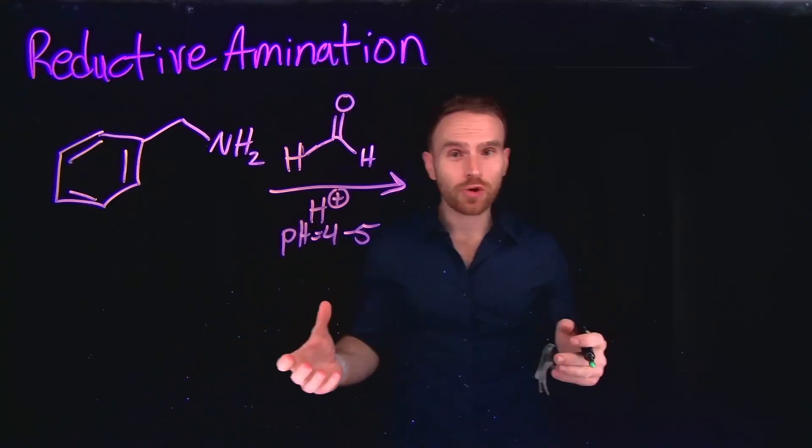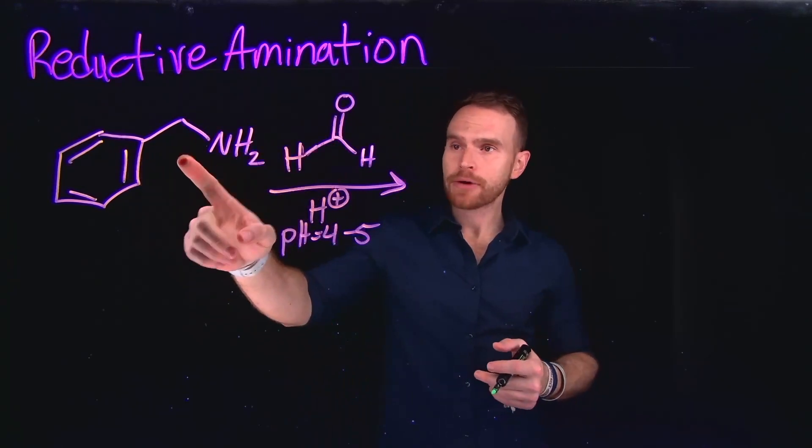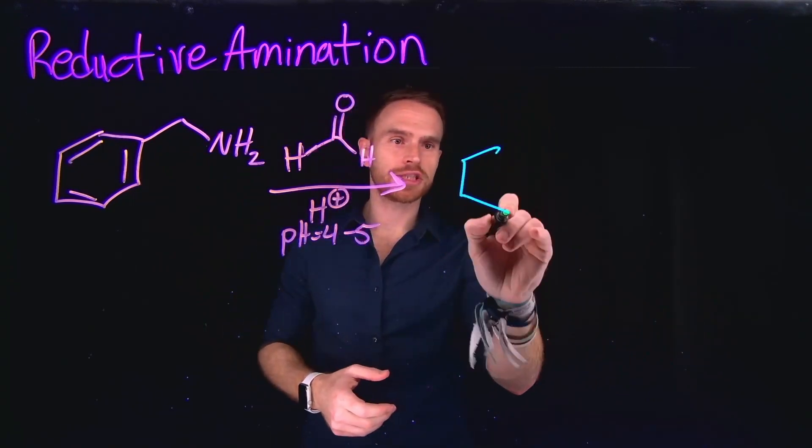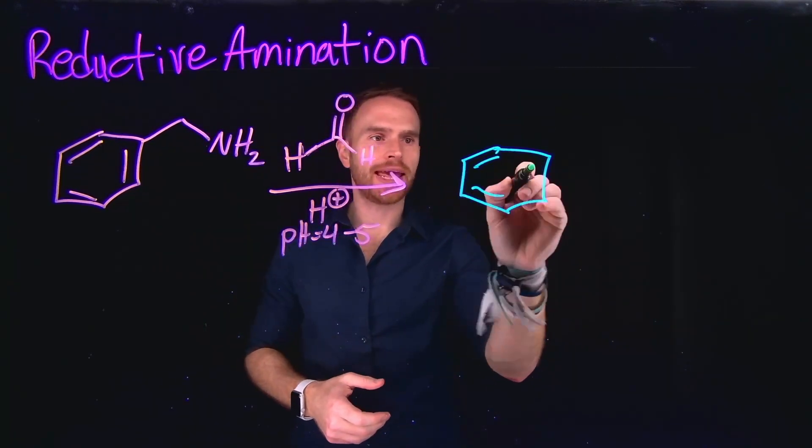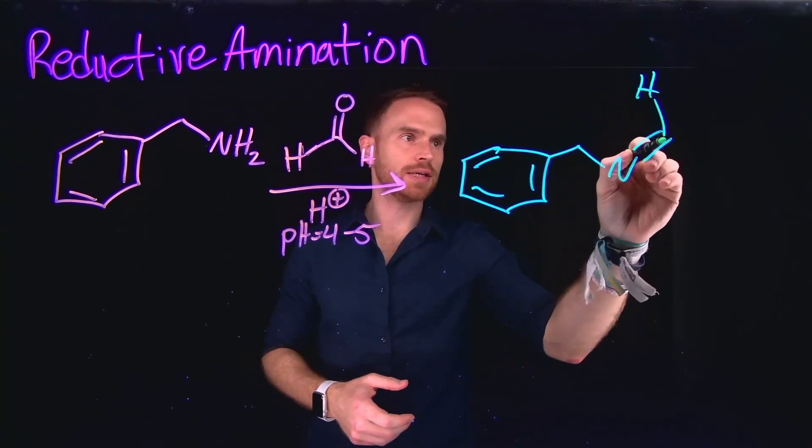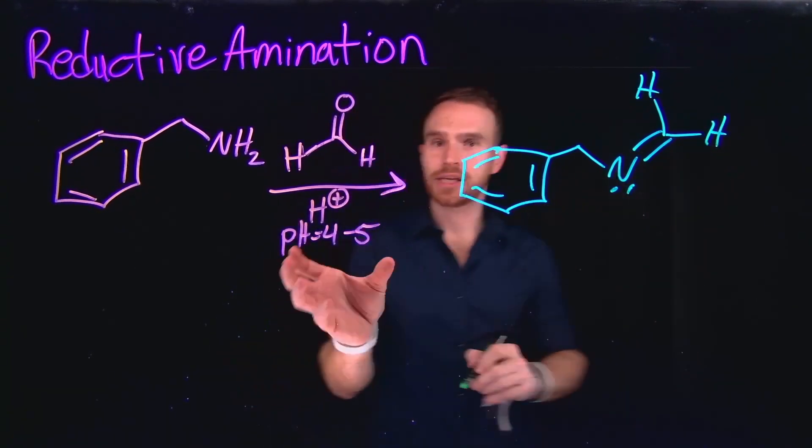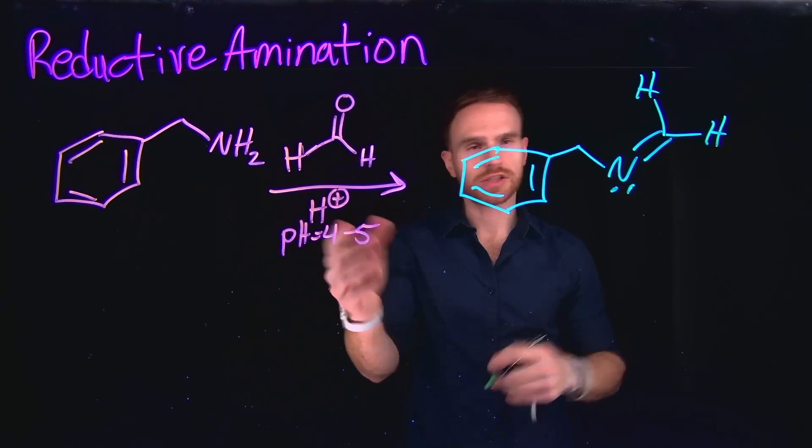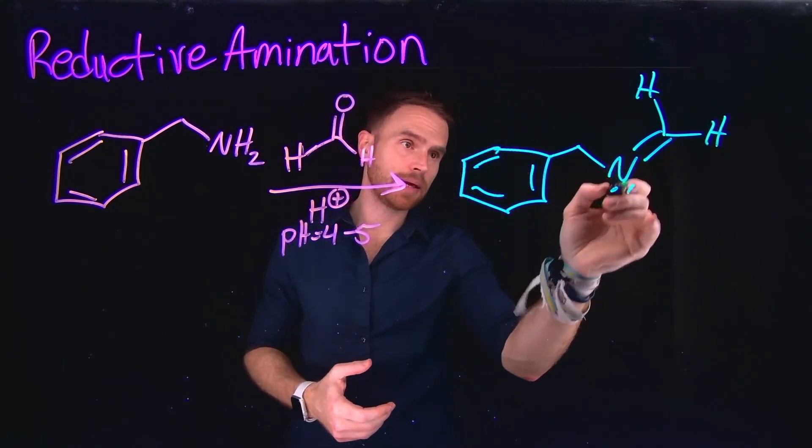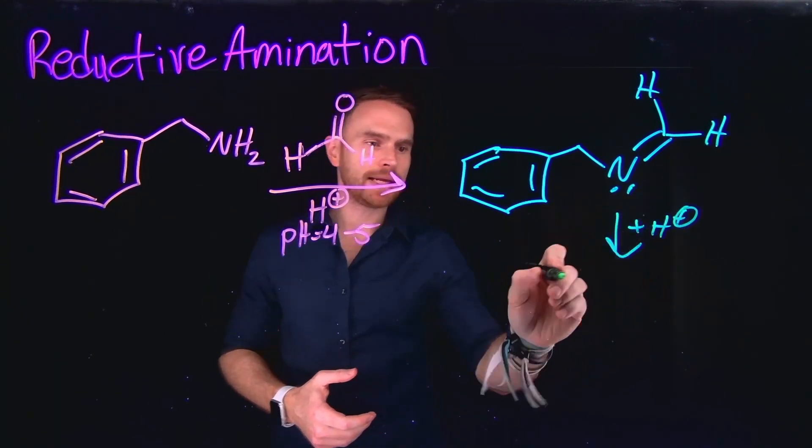An even more versatile method for generating amines is going to be reductive amination, where a primary amine can attack a carbonyl group. And when doing so, this is going to generate what is called an imine functional group. So an imine is formed through this process as an intermediate. Now notice that the reaction conditions call for acidic conditions at low pH using some acid. And this means we can protonate the imine nitrogen to generate what is called an iminium ion.